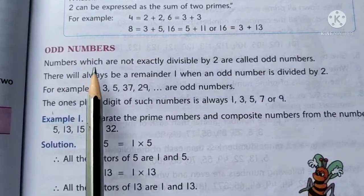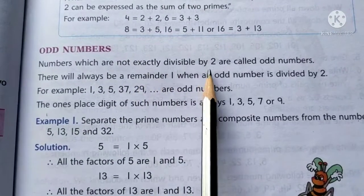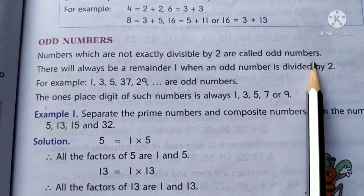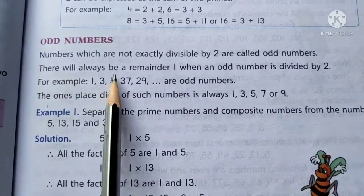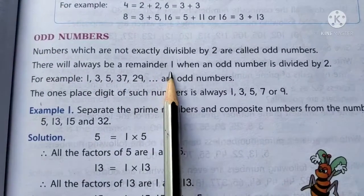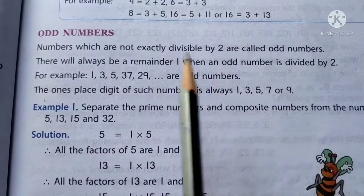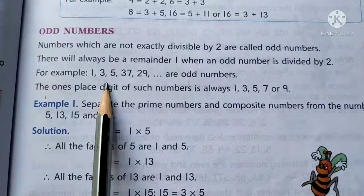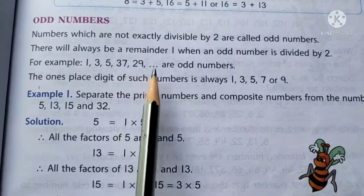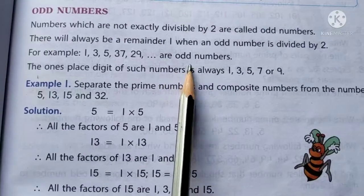Odd numbers. Numbers which are not exactly divisible by 2 are called odd numbers. There will always be a remainder 1 when an odd number is divided by 2. For example, 1, 3, 5, 37, 29, etc. are all odd numbers.